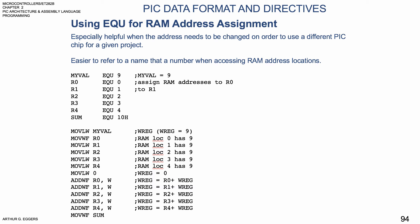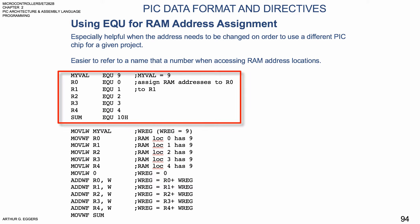In the next program, we're going to look at moving a value of 9 into RAM locations 0 through 4, then add them together and place the sum in location 10 hex. We call MyVal and equate it to 9. Then R0 is equated to 0, assigning that RAM address. We do the same for R1, R2, R3, and R4. The last step is an instruction to sum the values, and that sum is equated to hex location 10H.